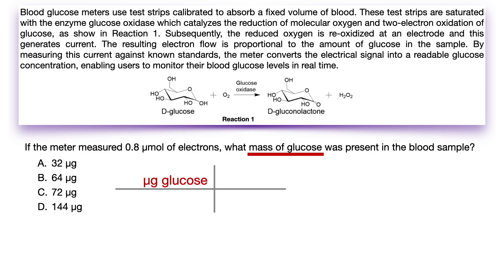The unit that is needed in the answer must be on top, so we're going to start with micrograms of glucose and let it guide what numbers to use and whether those numbers should go on the top or bottom of our stoic grid.